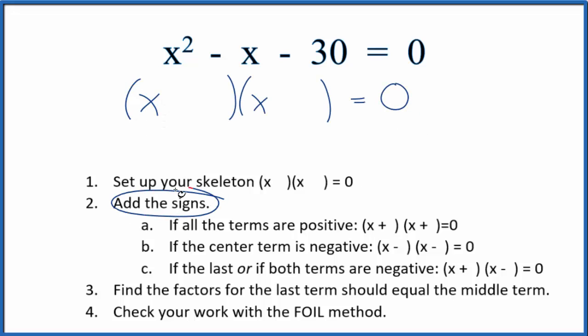Next, we'll add the signs in. If I look at this equation up here, I have a negative here and here. So, if I have both terms negative, I'll use this format right here. I'll have a plus and then a minus.